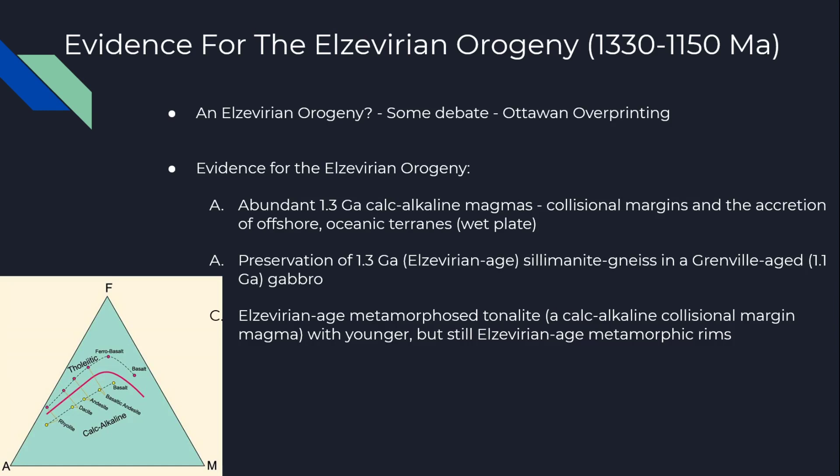The Elzevirian is the oldest event and therefore the hardest to interpret back to its original state, but there is evidence it started around 1.3 billion years ago. This is due to calc-alkaline magmas indicating collision-style convergence accreted in wet ocean settings. The preservation of 1.3-billion-year-old sillimanites and Ottawaian-age gabbros provides proof of large-scale deformation occurring well before the Ottawaian Orogeny. Therefore there must have been two types of events: original orogenesis, then a period of quiescence, and then a second, larger orogenesis.